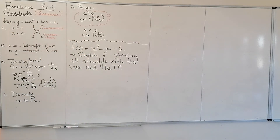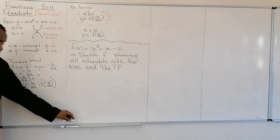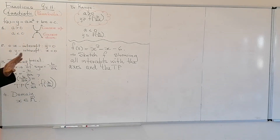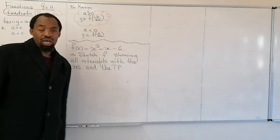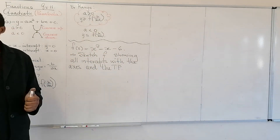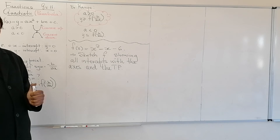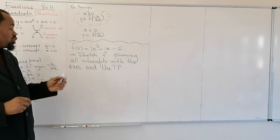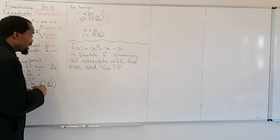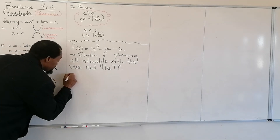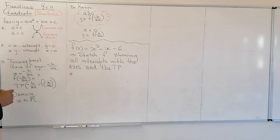Let me give you f of x equals x squared minus x minus 6. The instruction is to sketch the graph, showing all intercepts and the turning point. With this information it should be straightforward. Even in the exam, we break it down into smaller pieces — we never let you swallow the whole elephant, we chop it into smaller pieces you can manage.